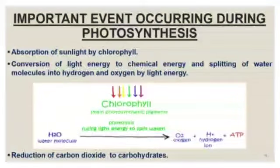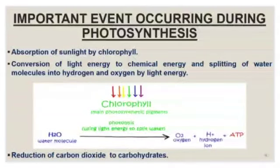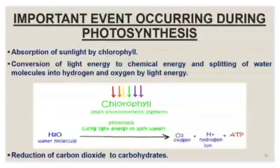There are three major events that take place during the process of photosynthesis. First is absorption of sunlight by chlorophyll — chlorophyll is a green pigment present in green plants. Second is conversion of light energy to chemical energy and splitting of water molecules into hydrogen and oxygen by light energy.